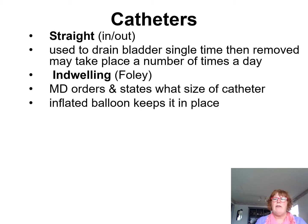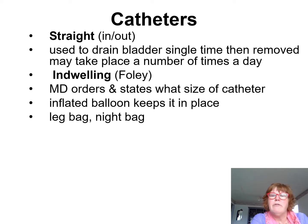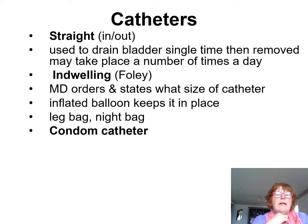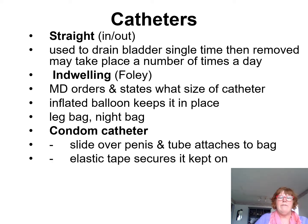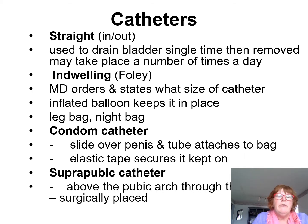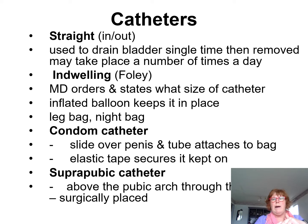An indwelling or Foley catheter requires a doctor's order specifying the size. It is kept in place by an inflated balloon and is used when a catheter is needed for a longer period of time — usually with a leg bag and a night bag. A condom catheter goes on the outside of the penis with a tube attaching to the bag, secured with elastic. A suprapubic catheter is placed above the pubic arch through the abdominal area and is surgically inserted, changed by the doctor or nurse.